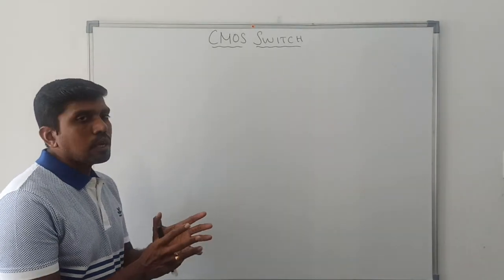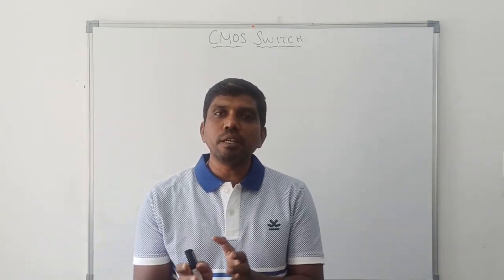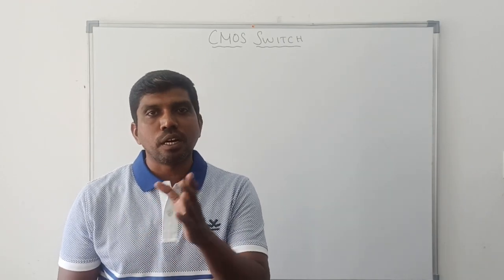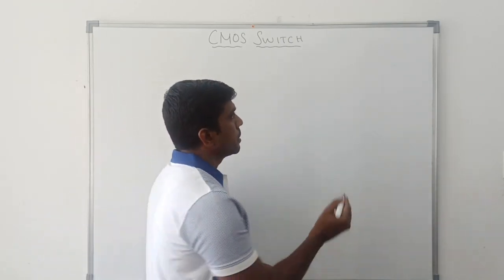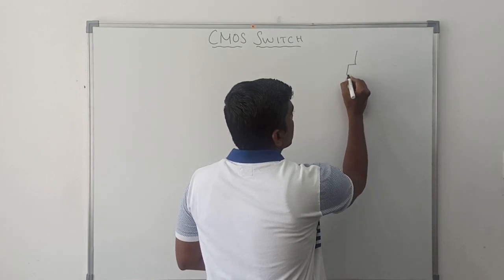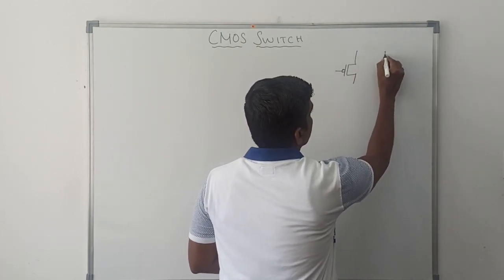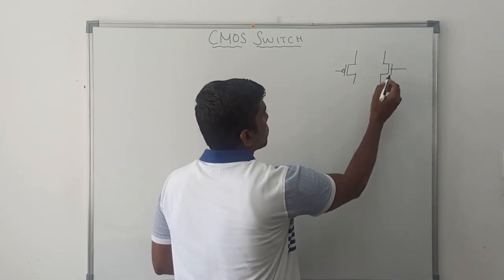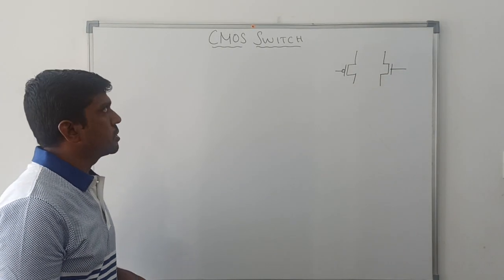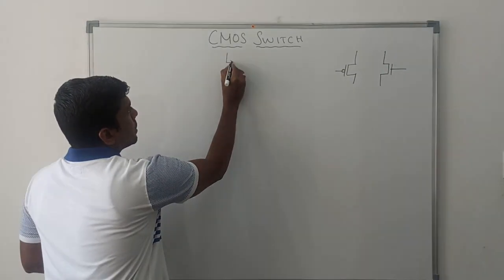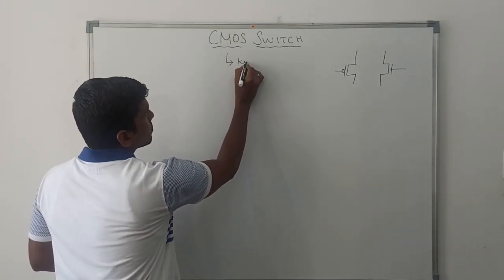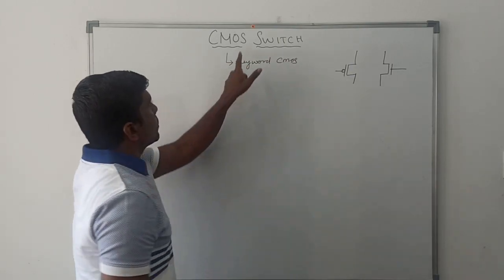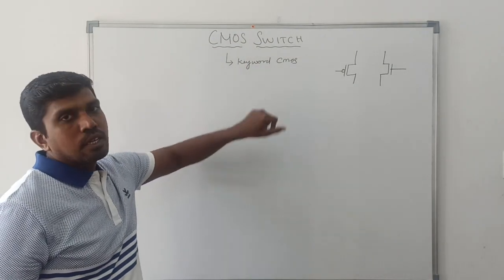CMOS switch - what is the abbreviation of CMOS? Complementary Metal Oxide Semiconductor. This CMOS switch consists of PMOS and NMOS switches. It consists of combinations of PMOS and NMOS. It is a PMOS, this one is NMOS switch. This CMOS switch is defined with the keyword CMOS.